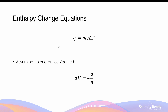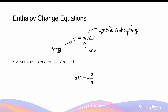By way of review, enthalpy change of combustion calculations centre around two main equations. The first equation is Q equals to mC delta T. Q is the energy absorbed or released by a substance that we are measuring the temperature change of. m is the mass of the substance that we are measuring the temperature of, and C is the substance's specific heat capacity. Delta T is of course the change in temperature.